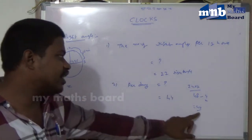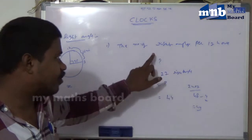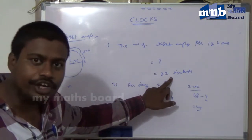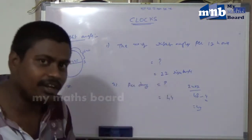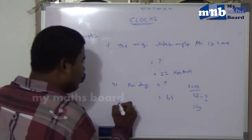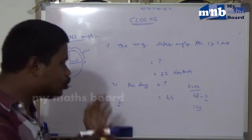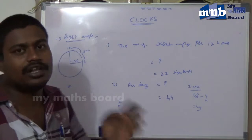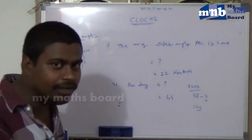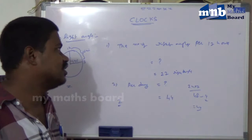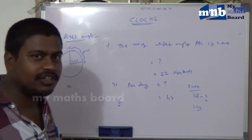Per day we face 44 right angle positions, per 12 hours we face 22 right angle positions, and per hour we face only two right angle positions. But in the special situation from two o'clock to four o'clock, we face three right angle positions. This is a very important point and has appeared in many competitive examinations.